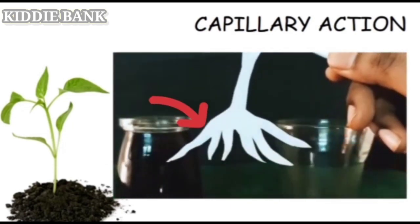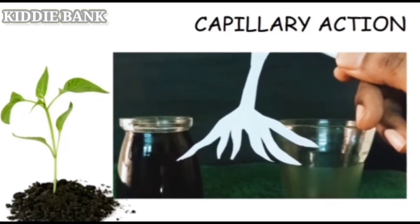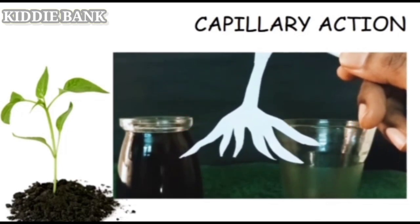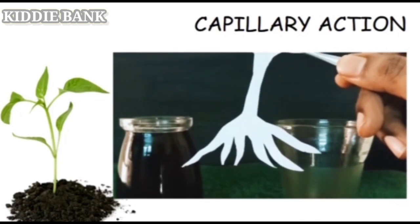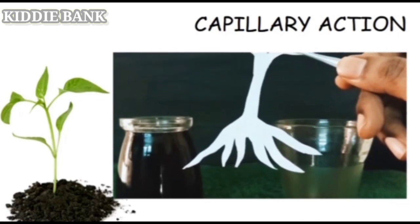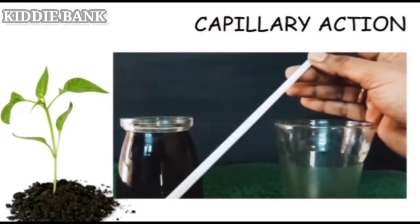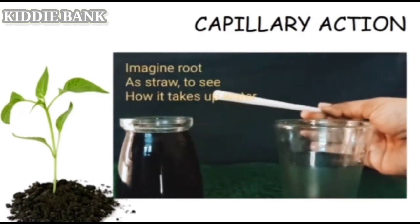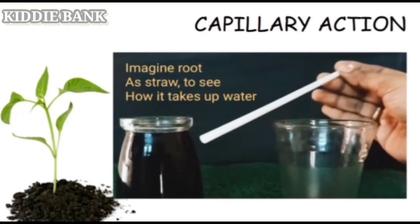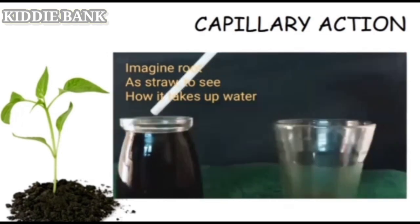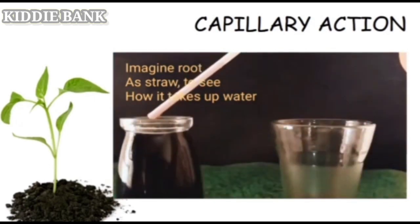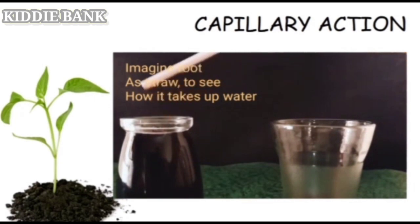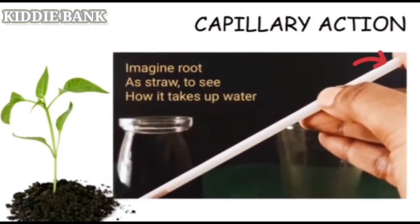Children, these are the roots of the plant. With the help of roots, the plant takes water from the soil as I said earlier. Let's try to do it with a straw — let's imagine this straw to be the root of the plant. Now I'll try to put it in the water and close the top of the straw. Can you see, children? I have closed the top of the straw.